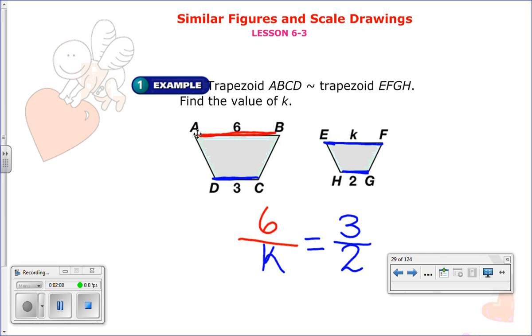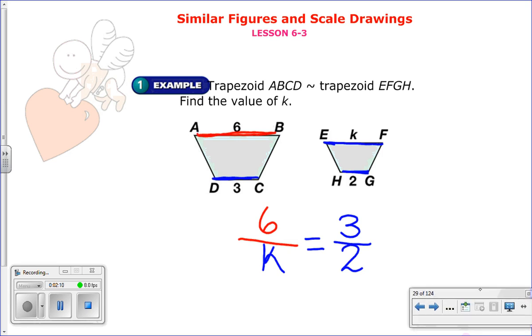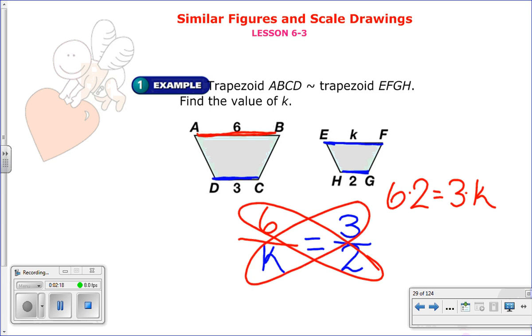And now, of course, I solve it by doing cross products. So same idea of yesterday. Six times two is the same as three times k. And I multiply. Six times two is twelve. Three times k is three k. And solve for k. I divide by three. And I get k is four units long. So k is four. So you can see how I had to first form a proportion in order to solve it.